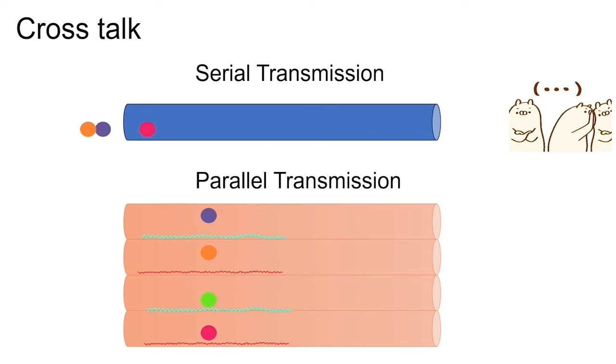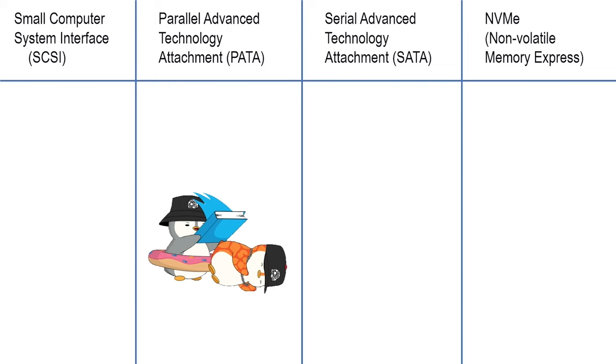We have four types of interfaces to connect a hard disk to the motherboard: SCSI, PATA, SATA, and NVM Express. Let us understand these types in detail.